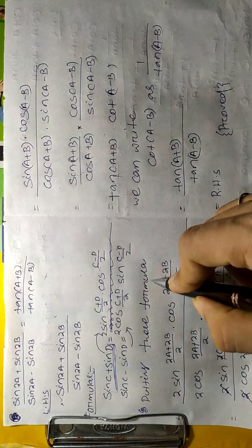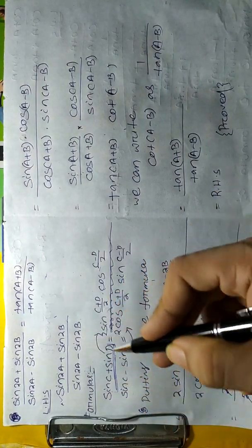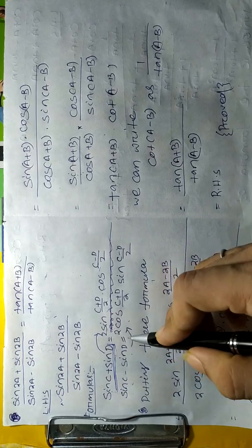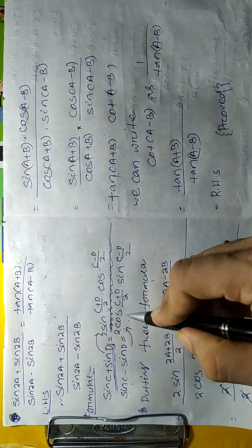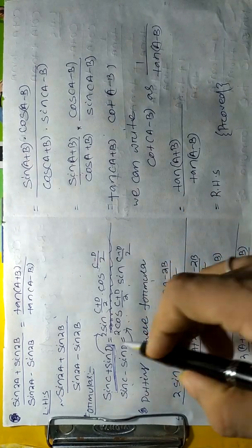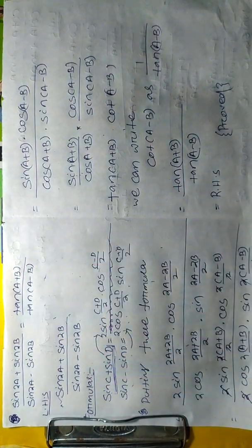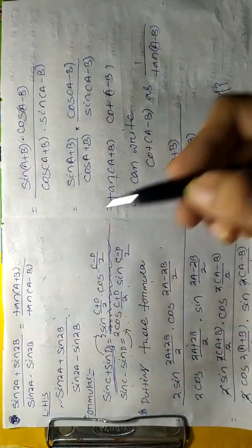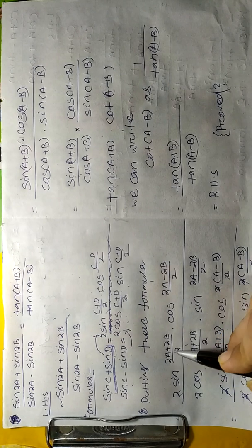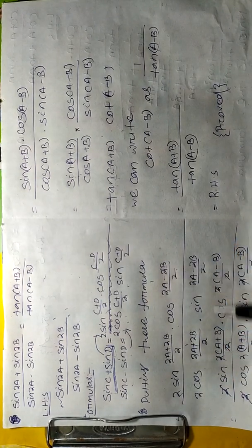Similarly, sine 2A minus sine 2B is in the form sine C minus sine D, whose formula is 2 cos((C+D)/2) into sin((C−D)/2). Putting these formulas in, we get 2 sine((2A+B)/2) into cos((2A−B)/2) in the numerator, and similarly for the denominator.